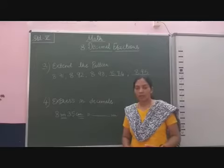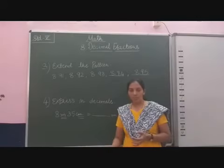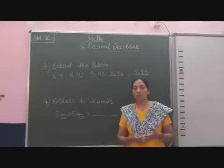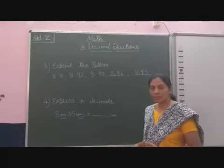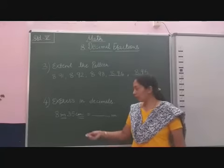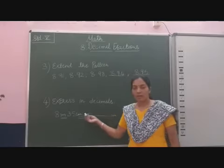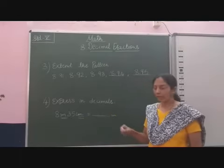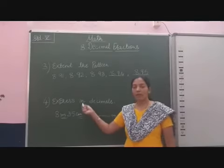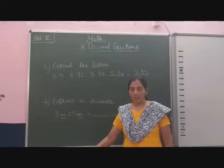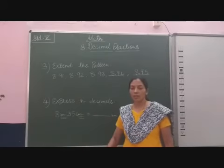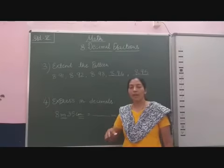As you know, when we convert meters into cm, 1 meter is equal to 100 cm. So here 8 meters we will write, and then 35 cm we need to convert into meters. When we convert cm to meters, we divide by 100.